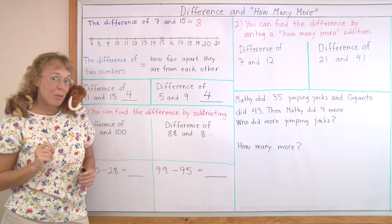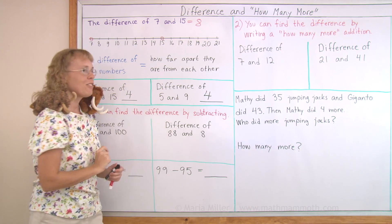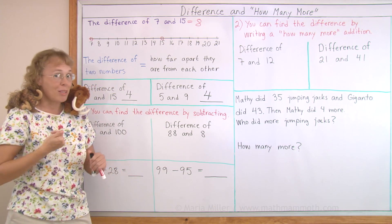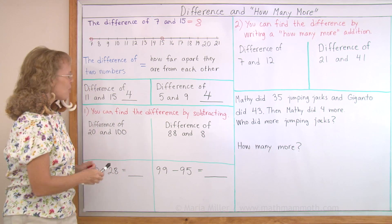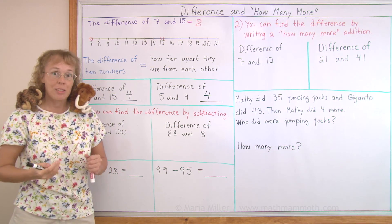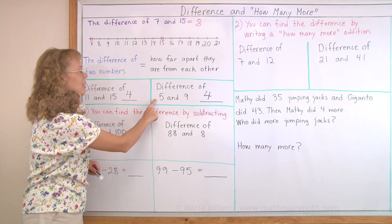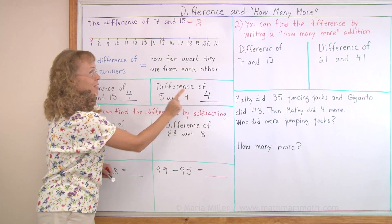But of course normally we don't use a number line to find the difference of two numbers, but we either subtract or add. So one way to find the difference is by subtracting the two numbers. For example here I can subtract 9 minus 5 and get 4.